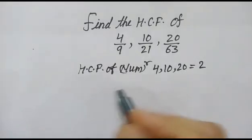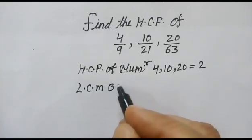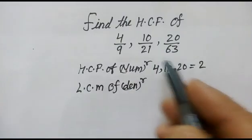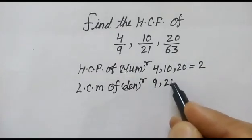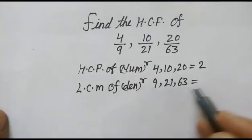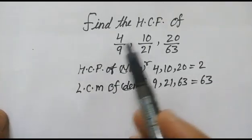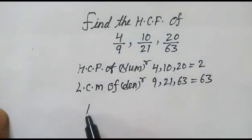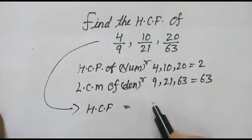In the next step, we will find the LCM of the denominators: 9, 21, and 63. The LCM of 9, 21, and 63 is 63.